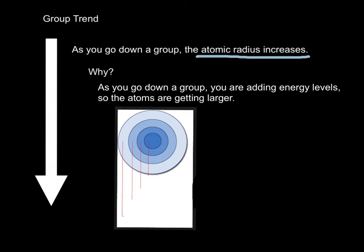Well, as you go down a group, you're adding energy levels, so the atoms are getting larger. Think, for instance, of this picture where this right here might be a 1s, right? So that might be kind of how big hydrogen would be. And then the next ring would be a 2s, so maybe that is lithium. You can see we're going down that group.